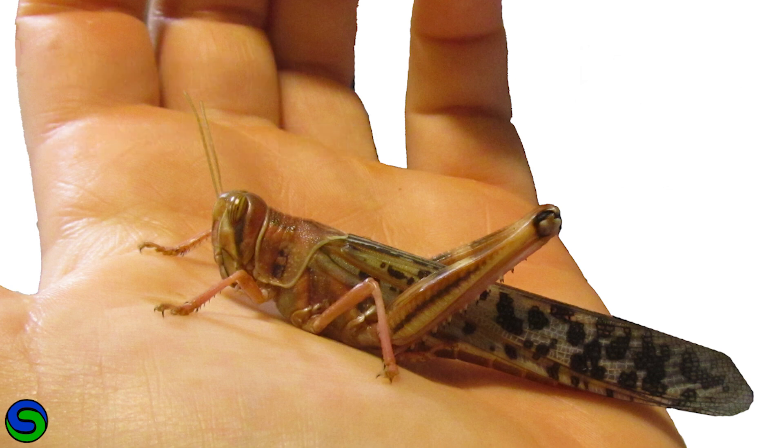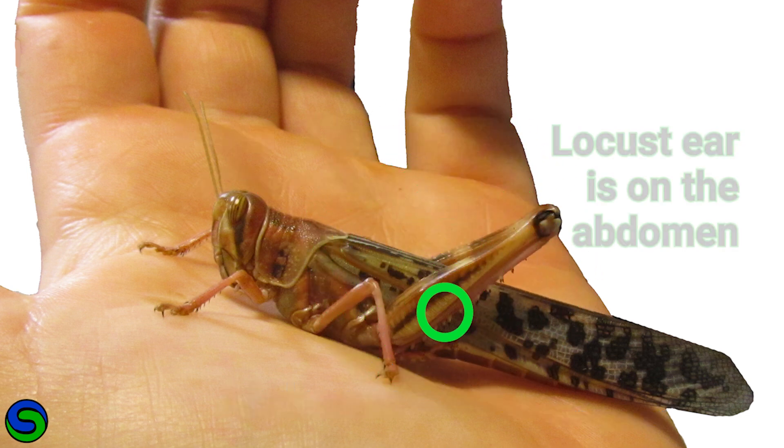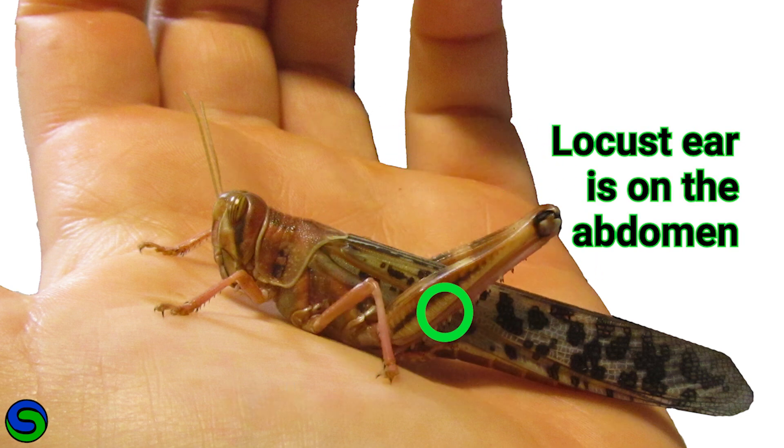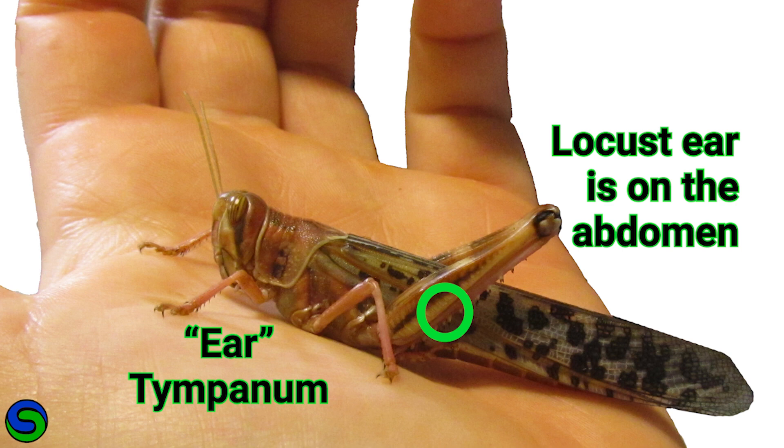Insects have three body segments: the head, thorax, and abdomen. The grasshopper has paired ears on the first segment of the abdomen. The ear is called the tympanum, or tympana plural.